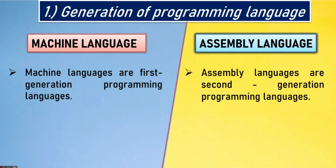First point — generation of programming language. Machine languages are first generation programming languages. Assembly languages are second generation programming languages.